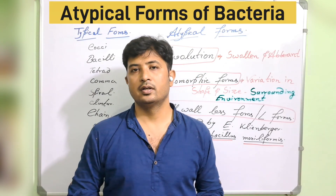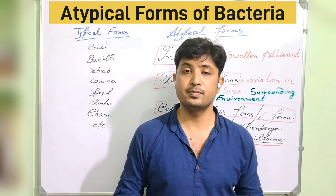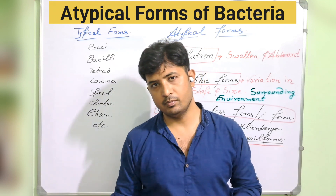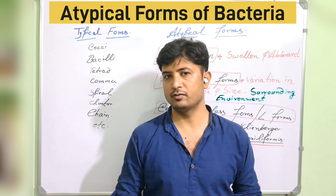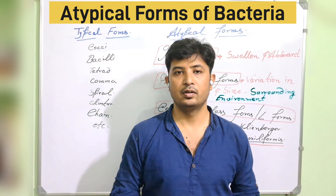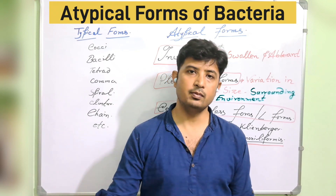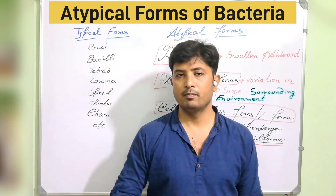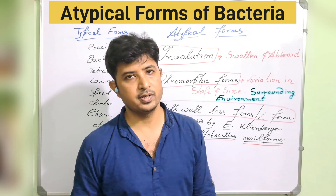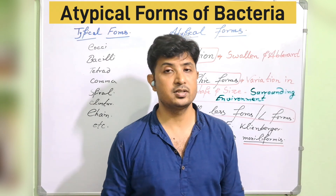Hello and welcome to BioFairs. Today I will be teaching you about the forms of bacteria — specifically the atypical forms, which are not commonly seen. There are two types of forms: typical and atypical. Typical means the normal form by which you identify an organism at the species or genus level. When characteristics change due to treatment, environmental pressure, or modifications, bacteria change their structure — these are called atypical forms.